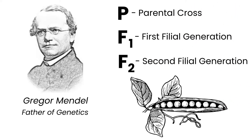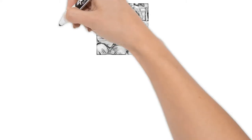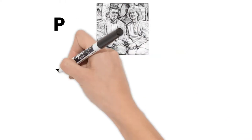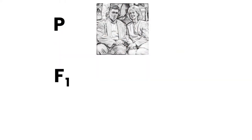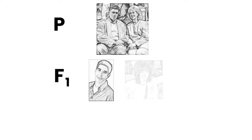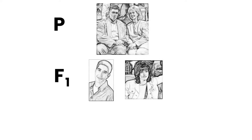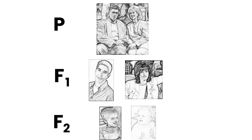To help you understand, let's look at this from the point of view of Ross from the TV show Friends. His parents are Jack and Judy, so they are the P generation. F1 is their children, Ross and Monica. F2 would be their biological children — grandchildren to Jack and Judy. In this example, Ben and Emma go on this line.